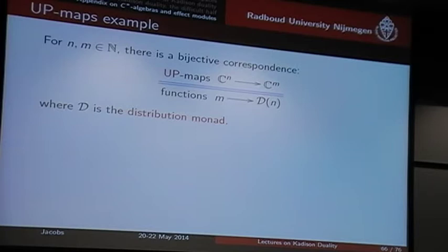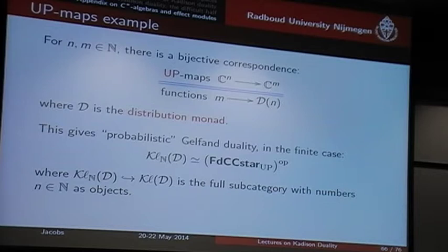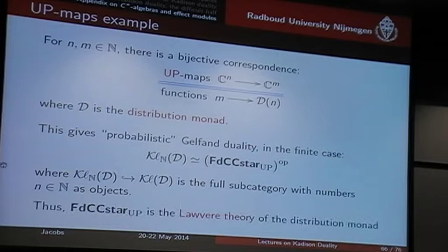In contrast, the UP maps — the unital positive maps — from C^M to C^M correspond to functions from M to the distribution monad on M. This is the discrete distribution monad. So in the unital positive maps, there is the idea of probability built in. This can also be described as a Gelfand duality: the Kleisli category of the distribution monad, when restricted to finite sets, corresponds to finite-dimensional commutative C*-algebras with the unital positive maps. And more abstractly, this shows that this C*-algebra comes from the Eilenberg-Moore theory of the distribution monad.